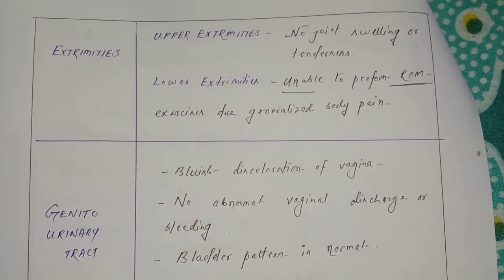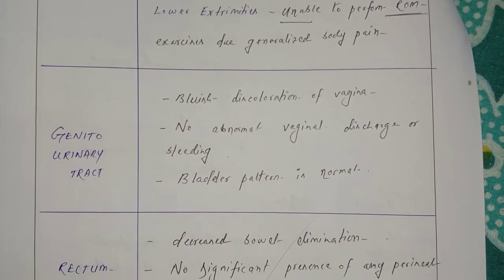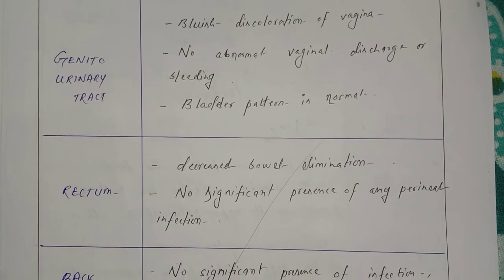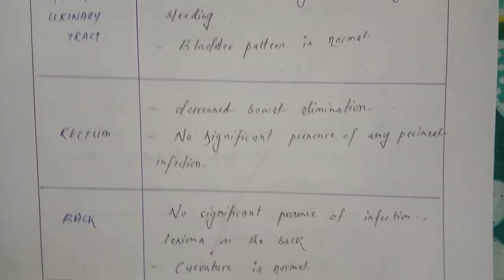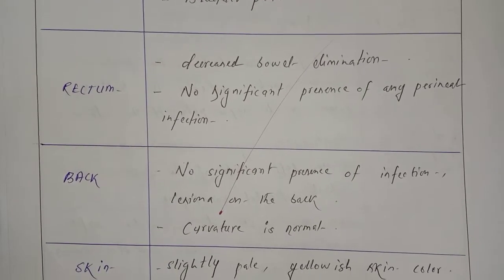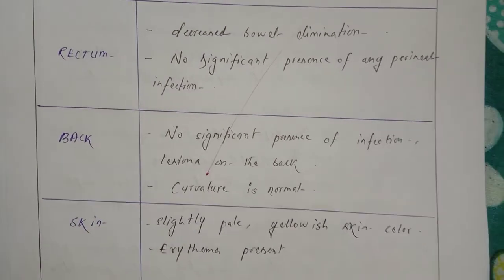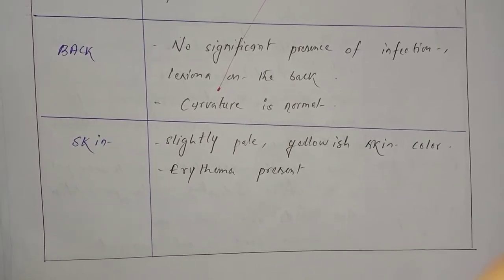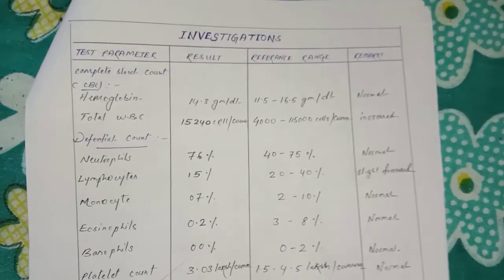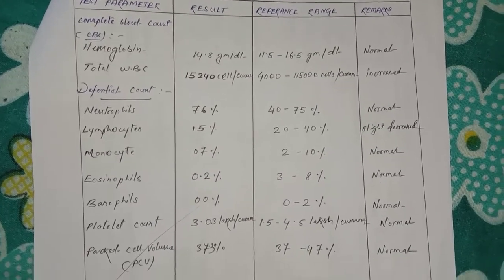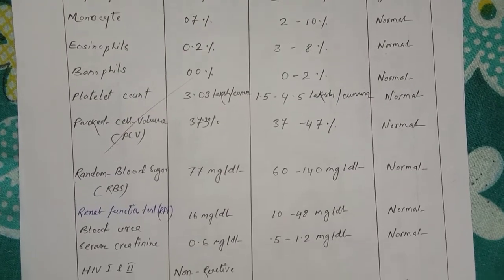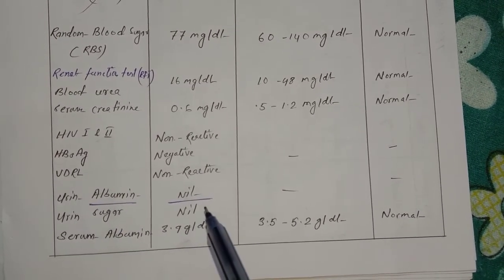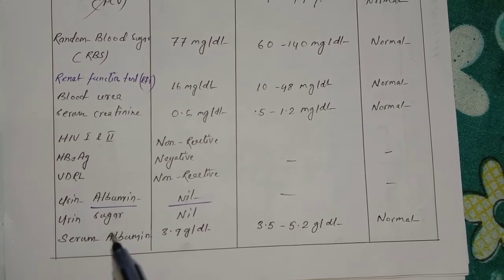Extremities: upper extremities — no joint swelling or tenderness. Lower extremities — unable to perform ROM exercise due to generalized body pain. Genitourinary tract: bluish discoloration of vagina, no abnormal vaginal discharge or bleeding, bladder pattern is normal. Rectum: decreased bowel elimination. Back: no significant presence of infection, curvature is normal. Skin: slightly pale yellowish skin color and erythema present. Investigation: urine albumin is nil — that is why the patient is diagnosed with PIH, pregnancy induced hypertension, and not preeclampsia.